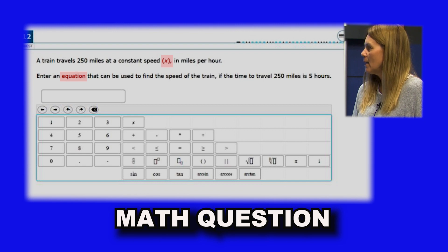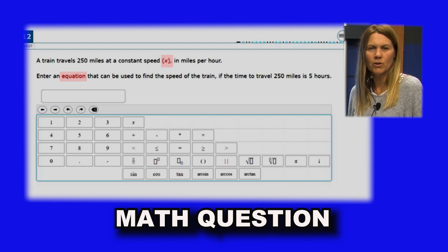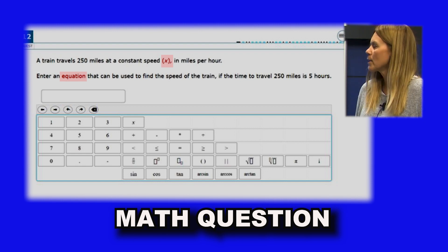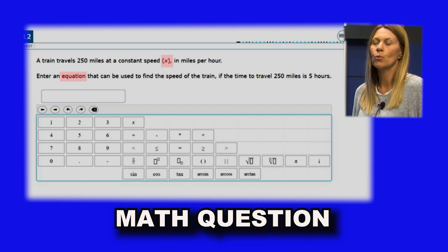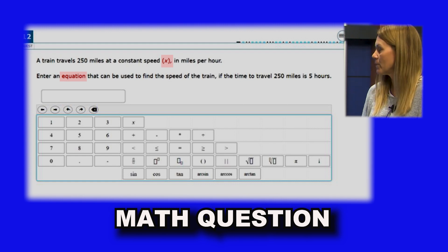formula would be distance equals rate times time. So for us here, we know hopefully that the distance is 250 miles, so in this box right here you're going to actually type in 250